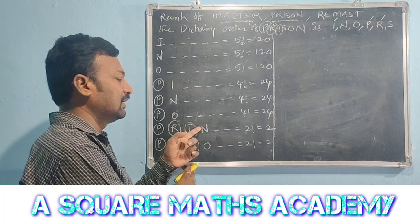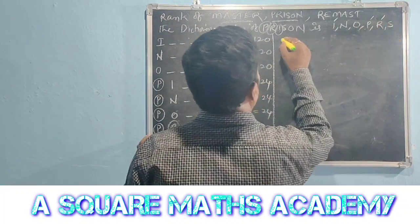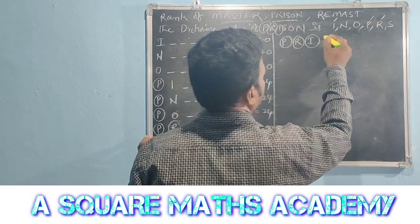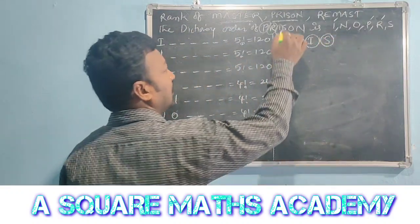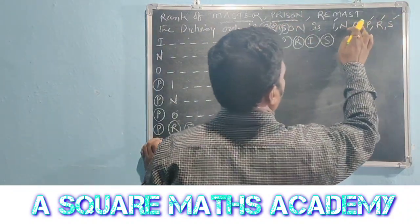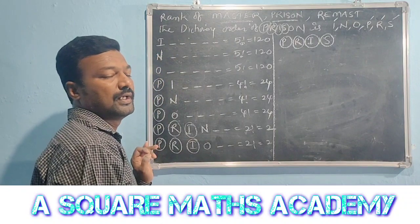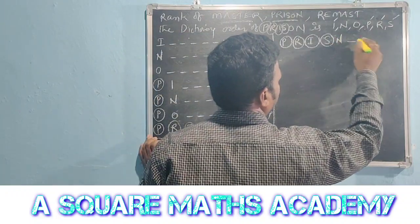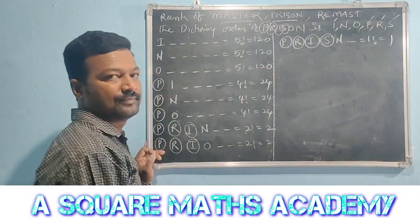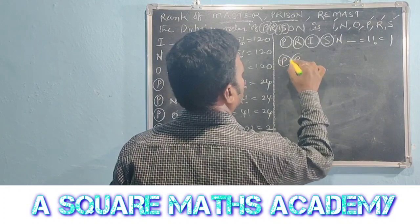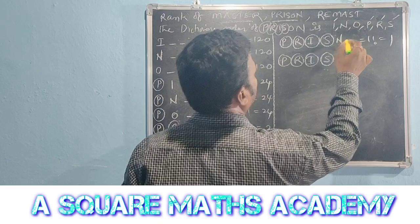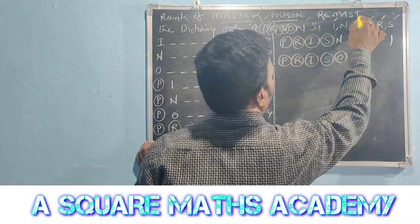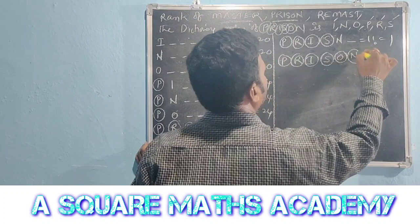Next P-R-I-S prefix. The 4th letter is S in PRISON. Letters N and O come before S, giving some arrangements. Then P-R-I prefix: next letter N comes, then O. The remaining letter after P, R, I, S is N, giving 1 arrangement.